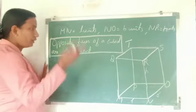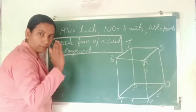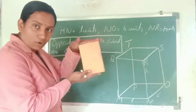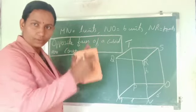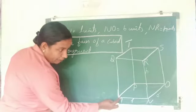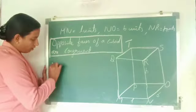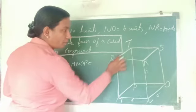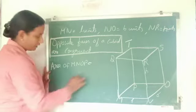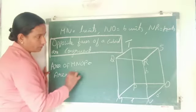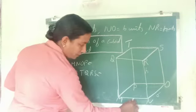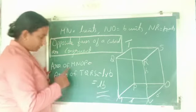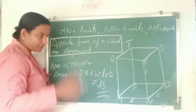We know opposite faces of a cuboid are congruent. This face and this opposite face are both congruent. First, find the area of MNOP. Area of MNOP is also equal to area of TQRS because both are opposite faces. That is equal to length L into breadth B, so area of MNOP equals LB.